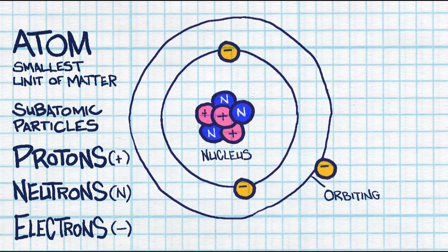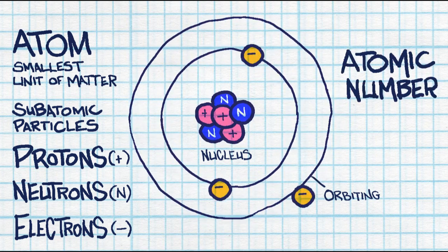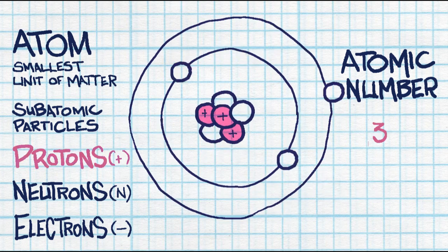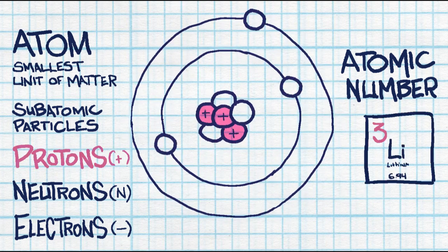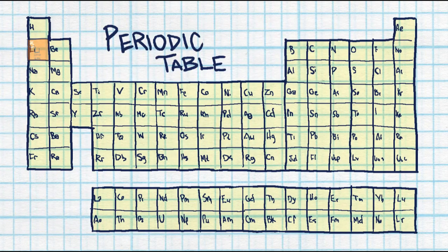If you have an atom and you're not sure which element it is, you're going to count up the atomic number, which is the number of protons. That's what identifies an element, and you can find an element on a periodic table of elements.